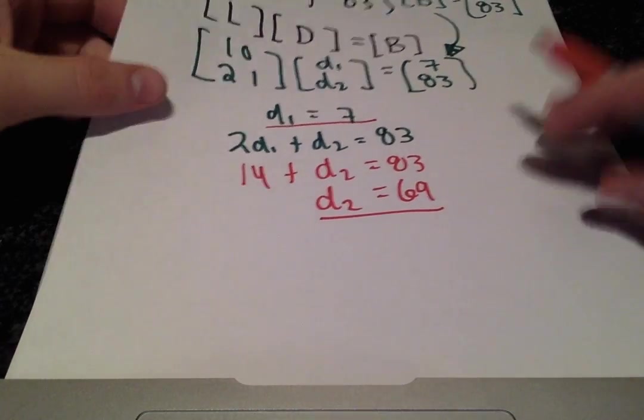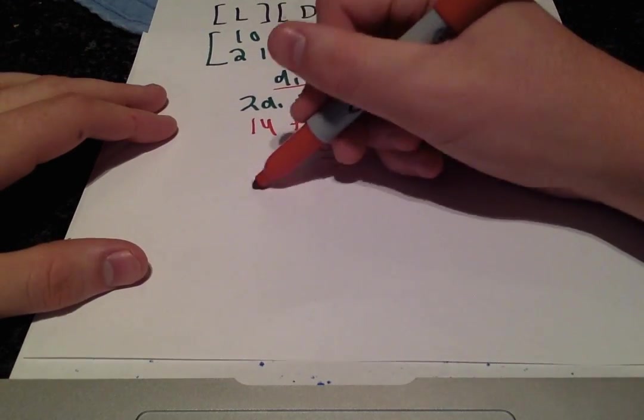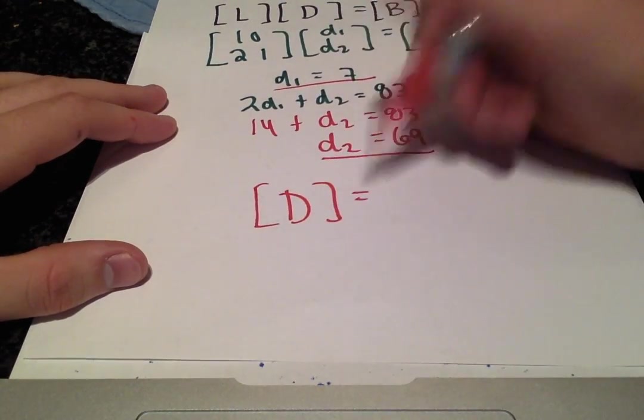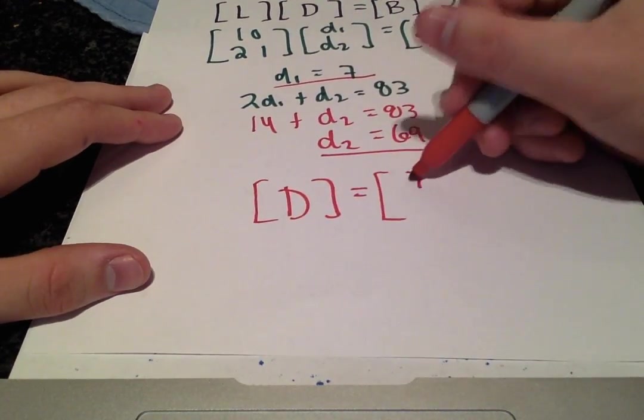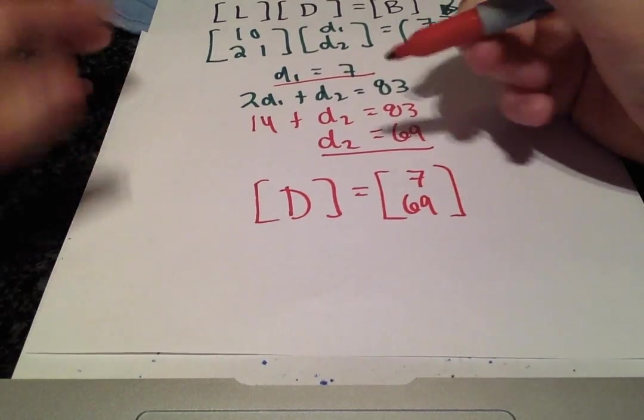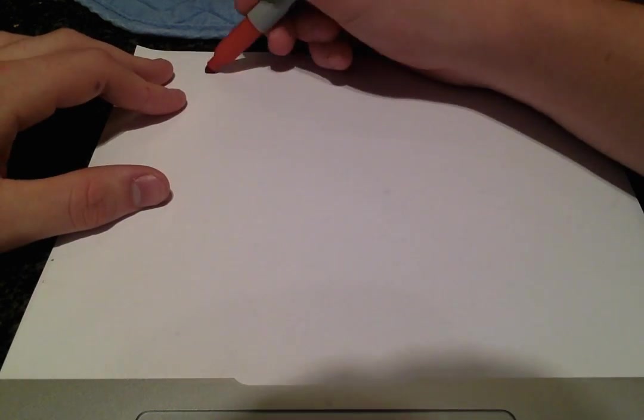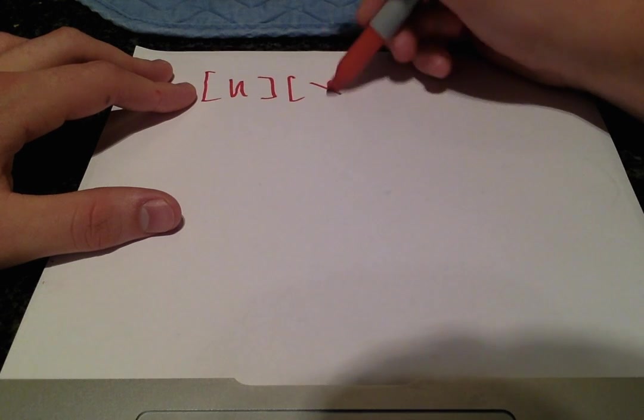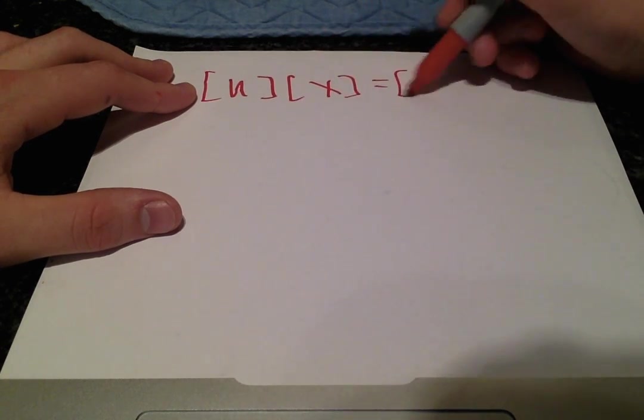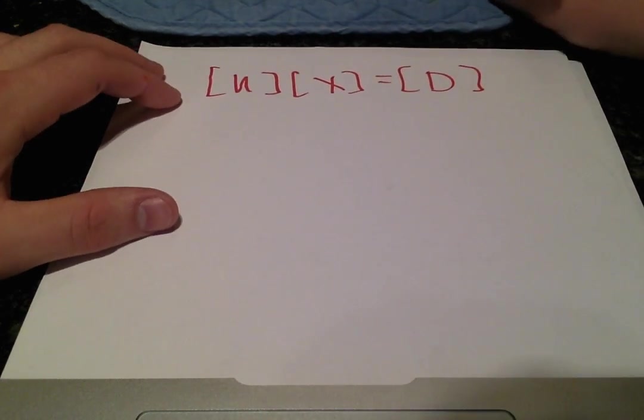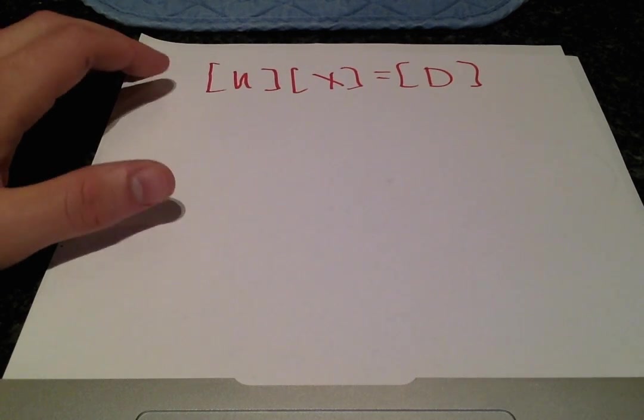We can write our D vector altogether with D1 and D2, 7 and 69. Now we'll use that to solve for X. U times X equals D, and we can fill in these values.